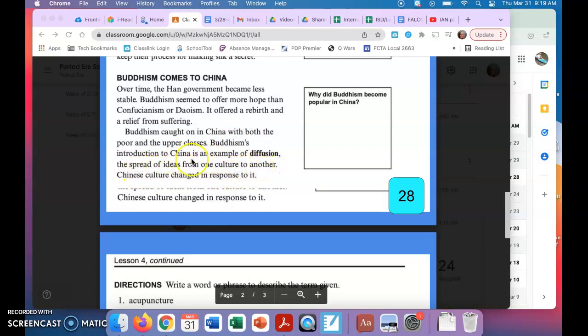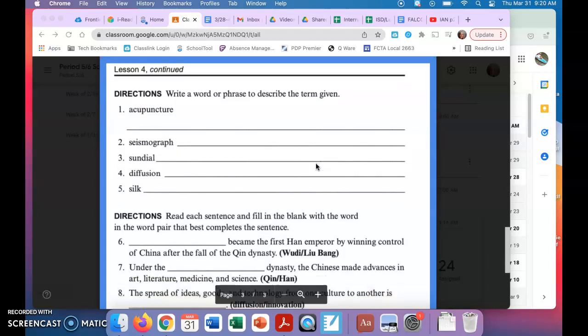Buddhism's introduction to China is an example of diffusion, the spread of ideas from one culture to another. Chinese culture changed in response to it. So again, why did Buddhism become popular in China?